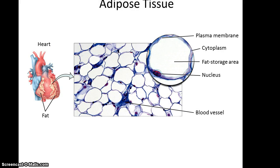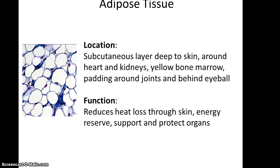Adipose tissue is unique in that it looks like you have big cells that are empty, but actually that white area inside the cells is where fat is stored. Adipose tissue is located in the subcutaneous layer deep to the skin, around the heart and kidneys to provide cushion, makes up the bulk of yellow bone marrow, and is found as padding around joints and behind the eyeballs. Its functions include reducing heat loss to the skin, serving as an energy reserve, and providing support and protection for some organs.